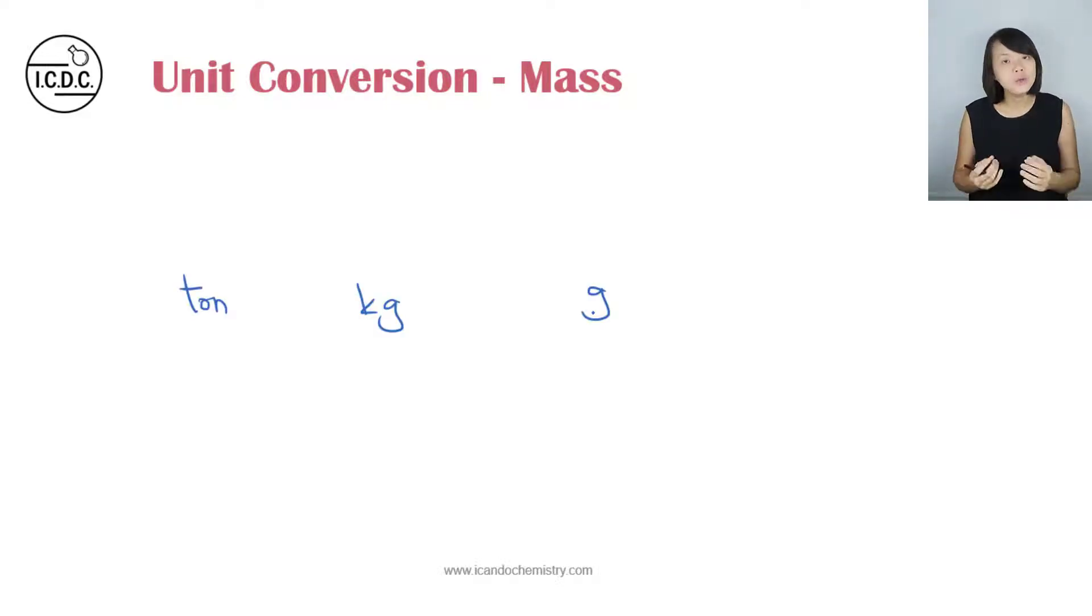Now for mass, the common units that we deal with are tons, kilograms and grams. So to convert the mass from tons to kg, what we need to do is multiply by a thousand. If we convert from kg to grams, what we need to do is multiply by another thousand.